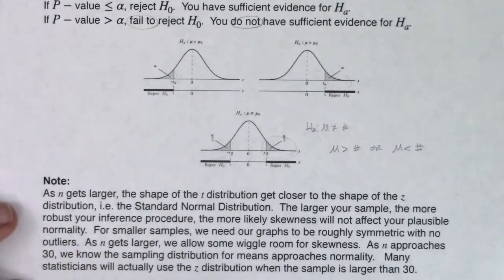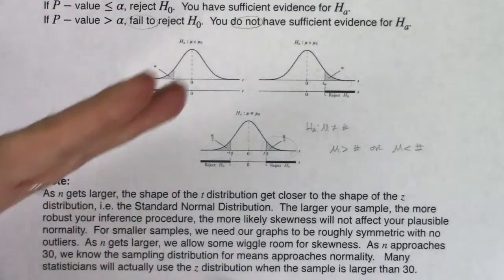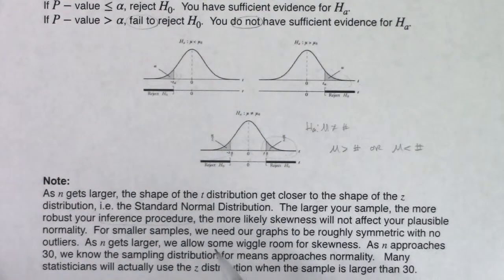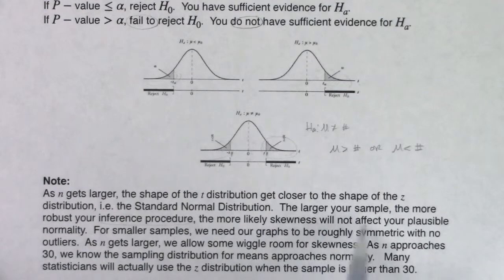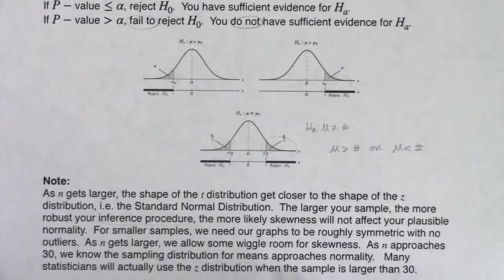As n gets larger, the shape of the t-distribution gets closer to the z-distribution — tails come down, peaks go up. The larger your sample, the more robust your inference procedure — confidence intervals and hypothesis tests. For smaller samples, we need our graphs to be roughly symmetric with no outliers. As n approaches 30, the sampling distribution for means approaches normality, and many statisticians will use the standard normal distribution when sample size exceeds 30.